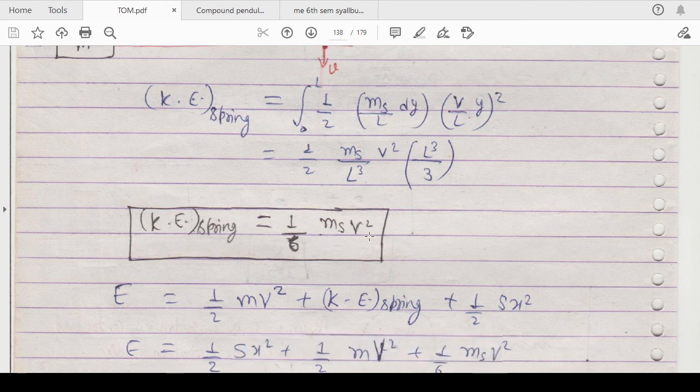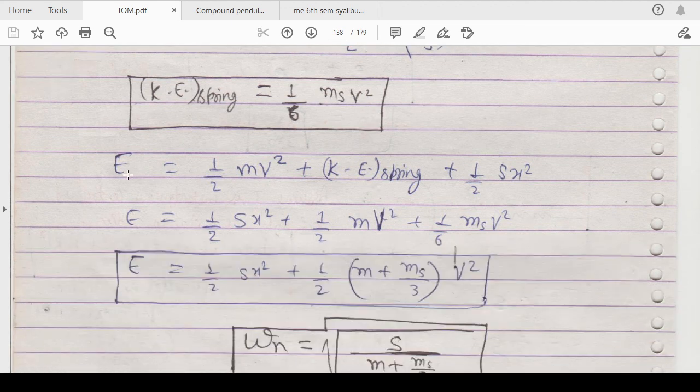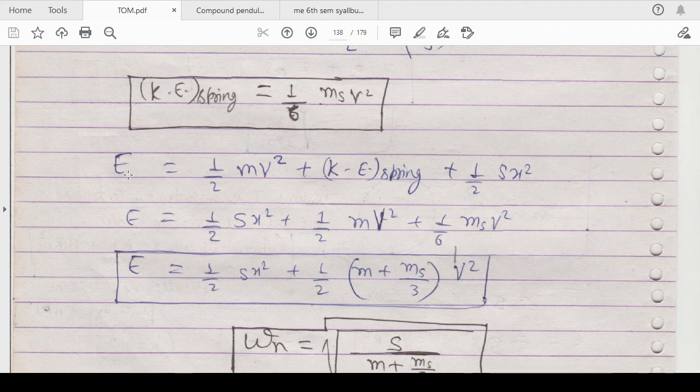Now let us calculate the whole energy stored in the body by applying the principle of energy conservation. That will be equals to half m v squared plus kinetic energy of the spring due to mass plus half sx squared. This will be equals to half m v squared, plus half sx squared which is potential energy, plus 1/6 into ms into v squared.